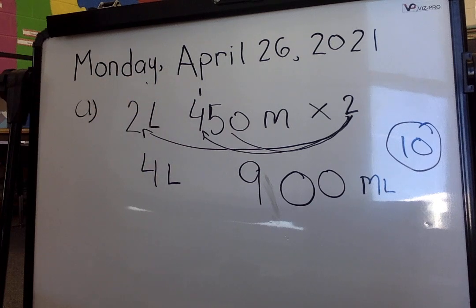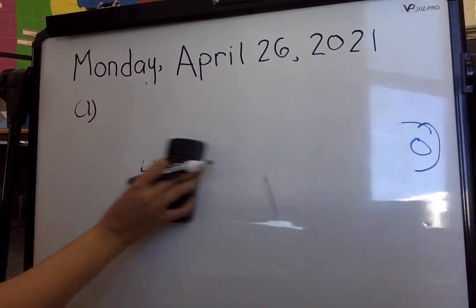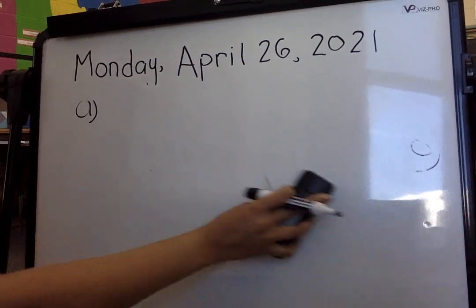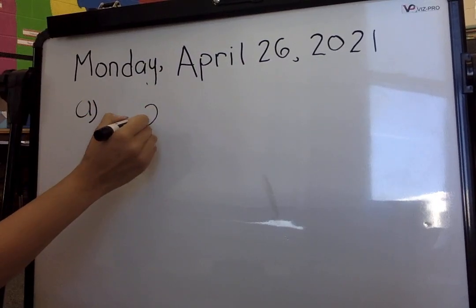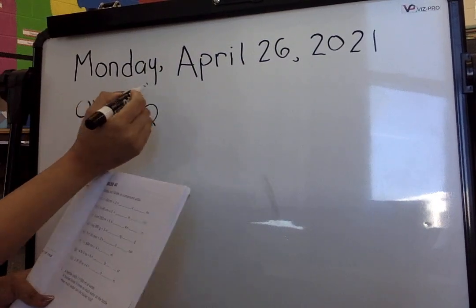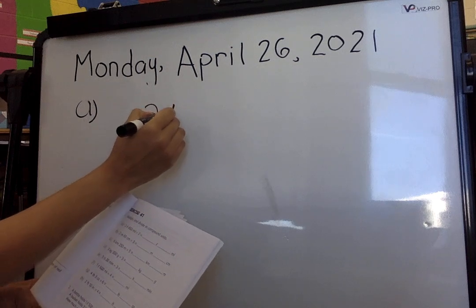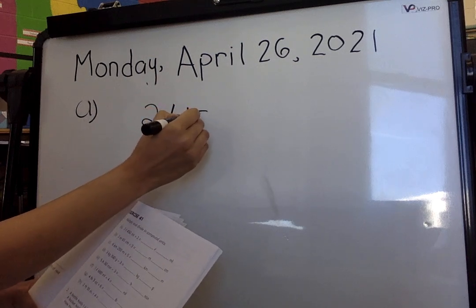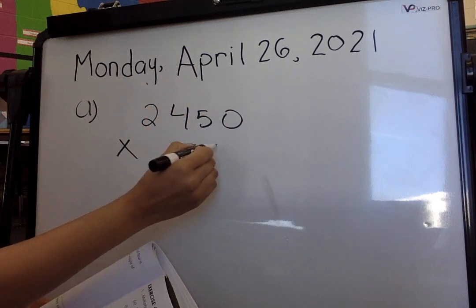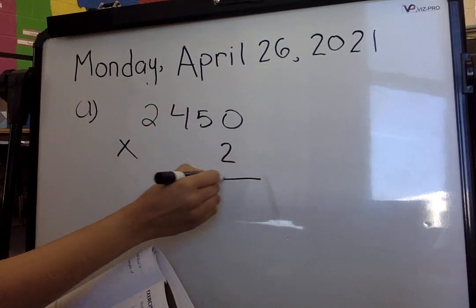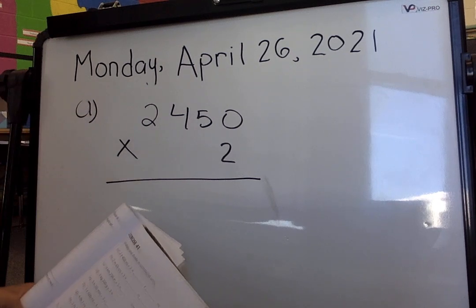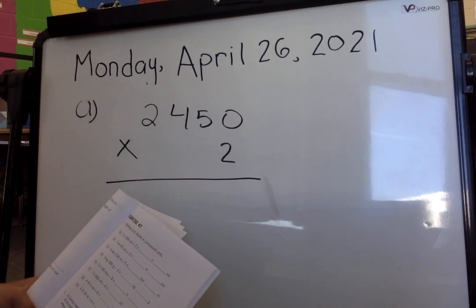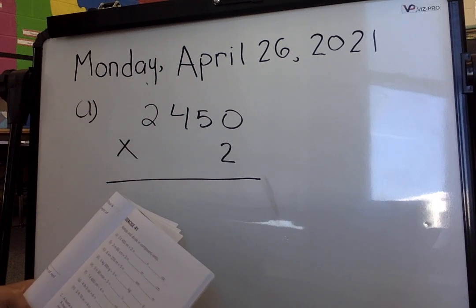This is one way, or you can stack up your numbers. You could have done 2,450 times 2 and you would get the same answer: 4 liters and 900 ml.